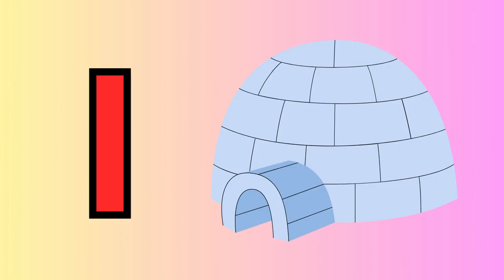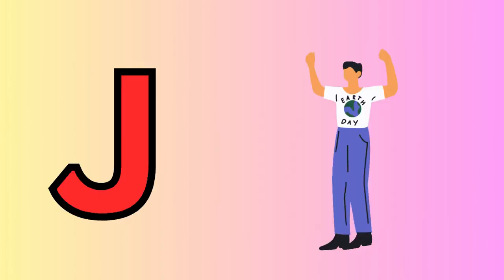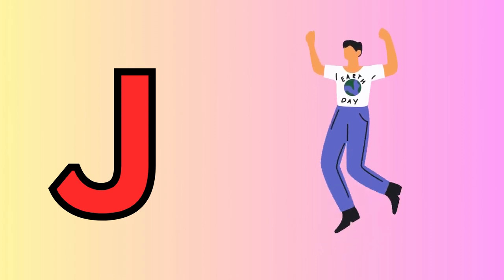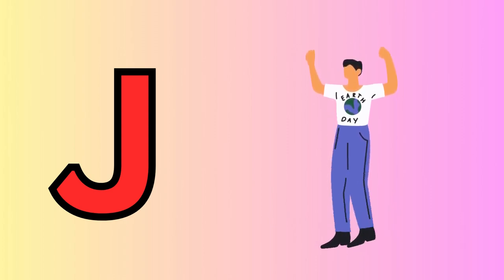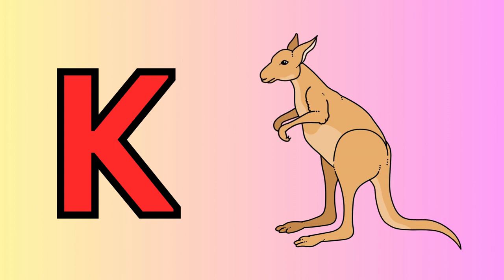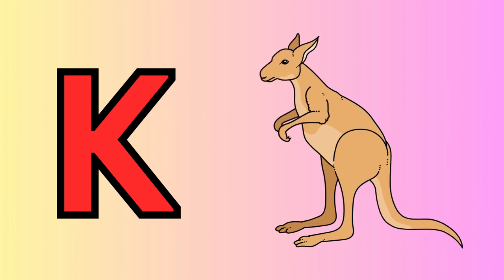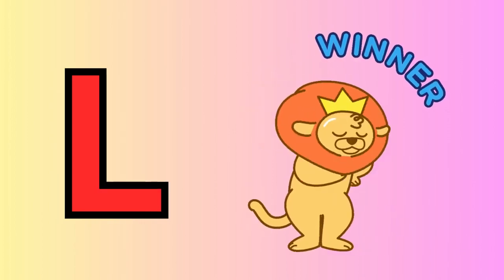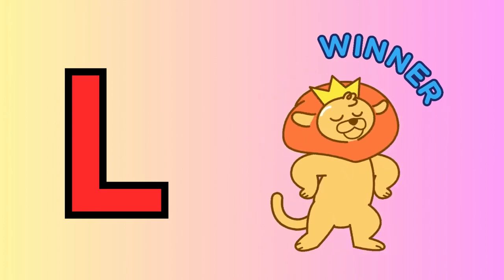I is for igloo, i-i-igloo. J is for jump, j-j-jump. K is for kangaroo, k-k-kangaroo. L is for lion, l-l-lion.